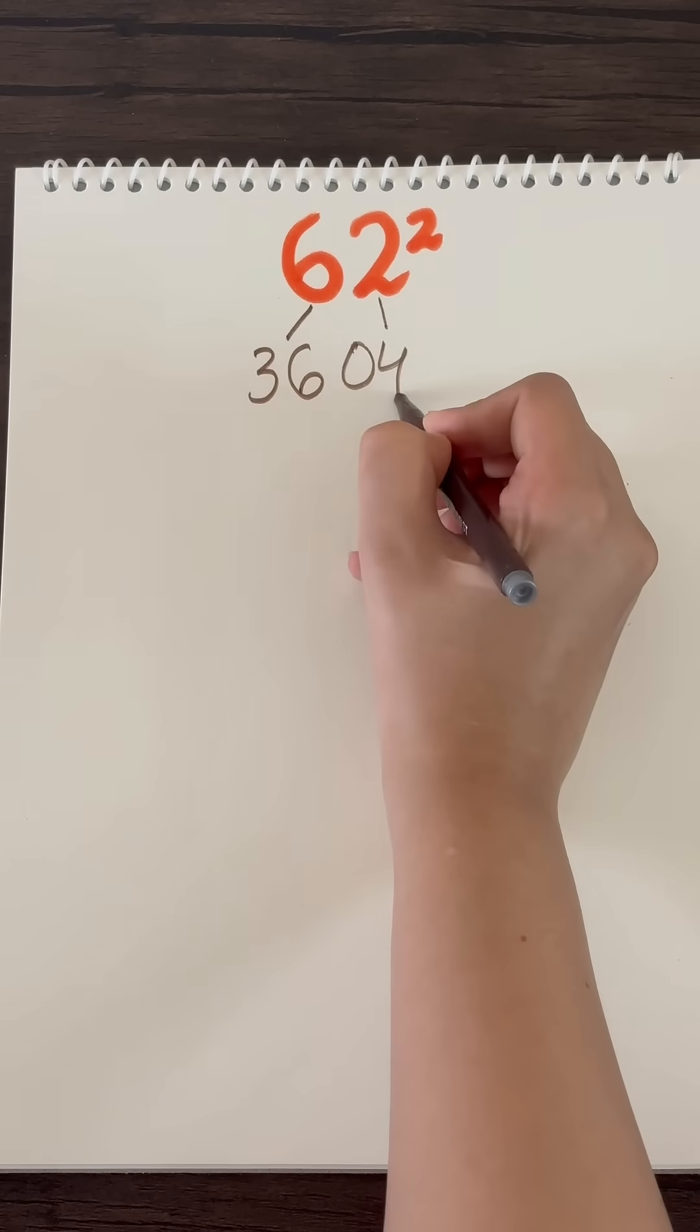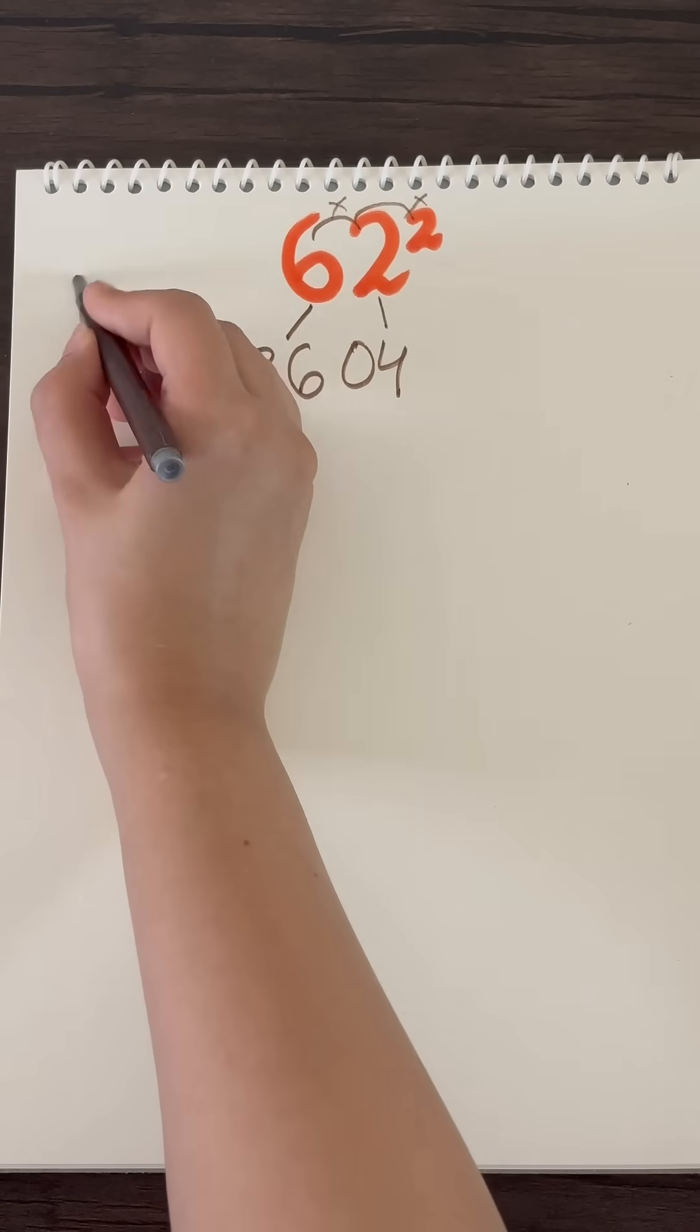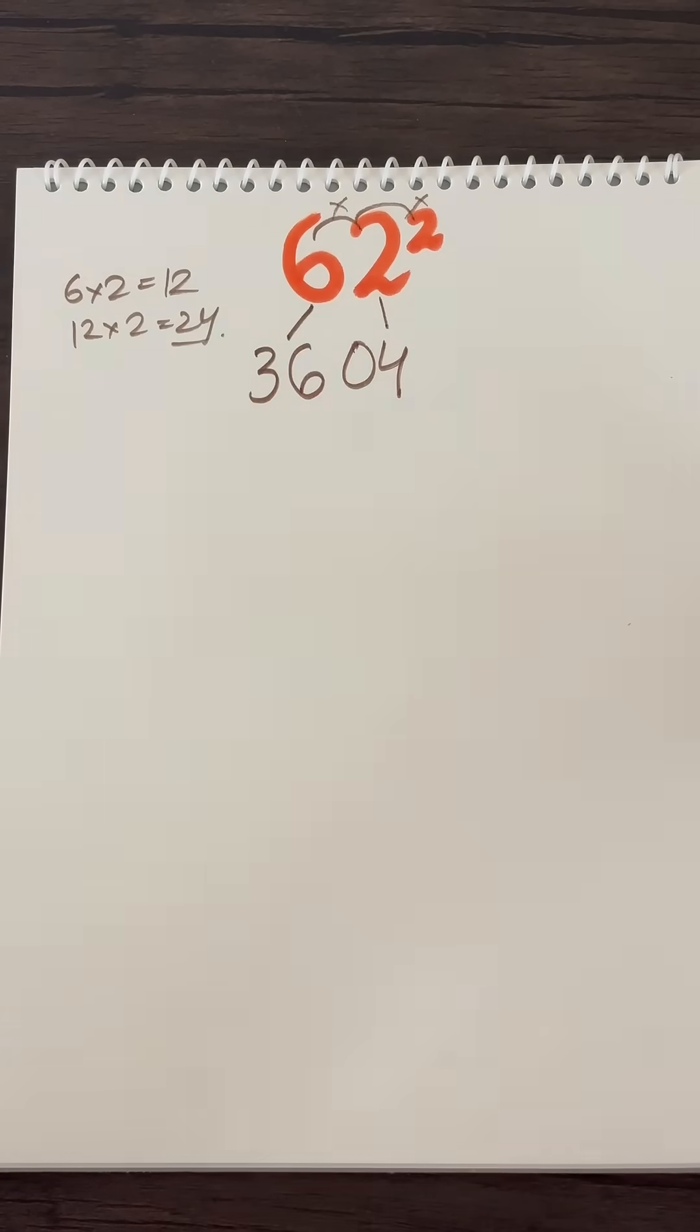Write it in two digits, which is 04. Now multiply all 3: 6 into 2 into 2. So 6 into 2 is 12, and 12 into 2 is 24. So this all equals to 24.